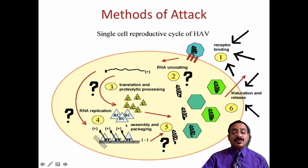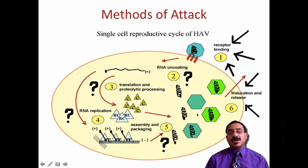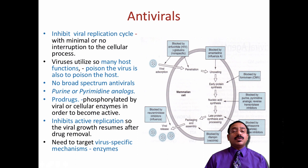A polycistronic protein is produced and it cleaves into individual proteins. These ultimately form the late proteins as well, helping in assembly. Once a mature virion is made within the cell, it is released by lysis of the cell.